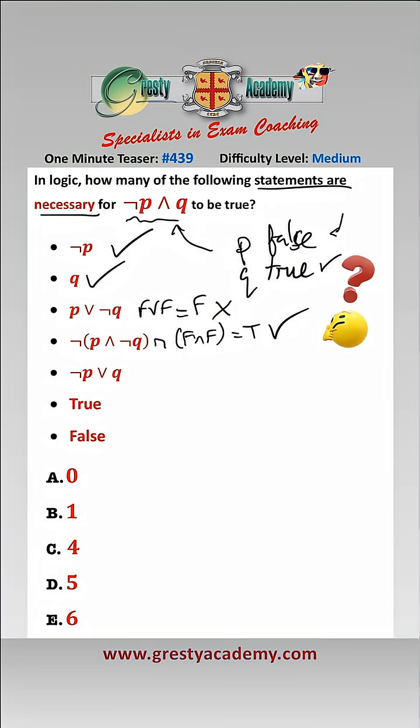For the fifth one, not P and Q to be true means that this one here is true or true, which is true, so this is necessary. True is trivially true all the time, so this is necessary for any conclusion, and false is false always, so that's never true regardless of what the conclusion is.